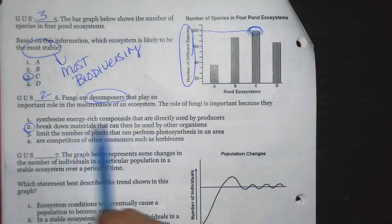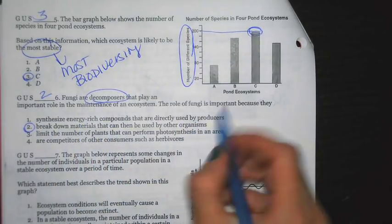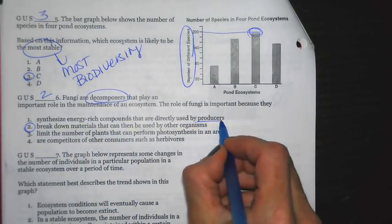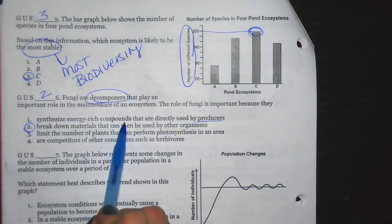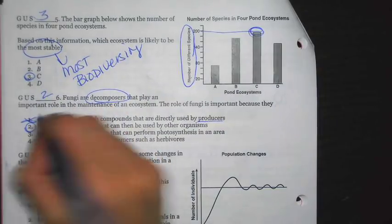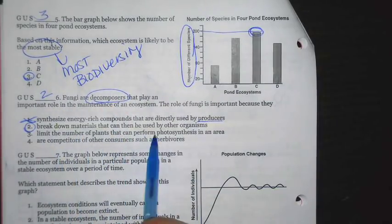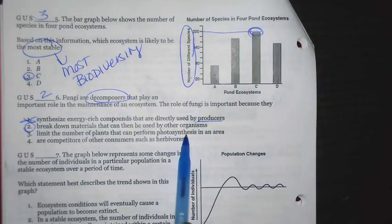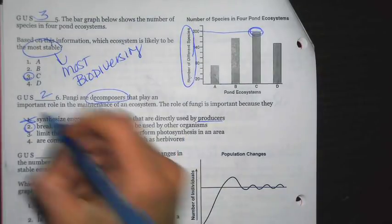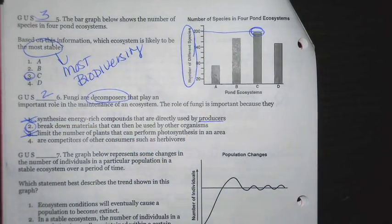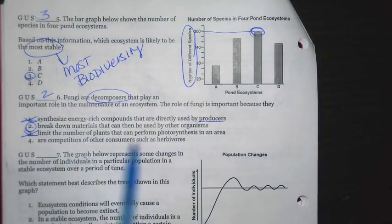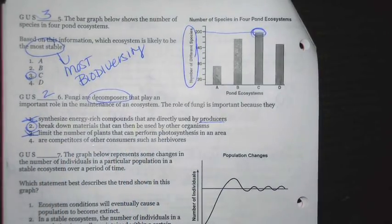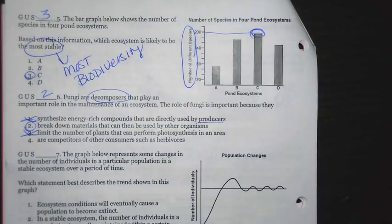One says, synthesize energy-rich compounds that are directly used by producers. Remember, producers are capable of synthesizing energy-rich compounds. They make their own food, so they don't rely on decomposers to do that. They limit the number of plants that can perform photosynthesis - no, because a fungi is not in the same niche as a plant. So, there's not going to be any competition there. Four says, are competitors of other consumers such as herbivores - typically, fungi recycle that dead organic material. And a herbivore actually eats plants.